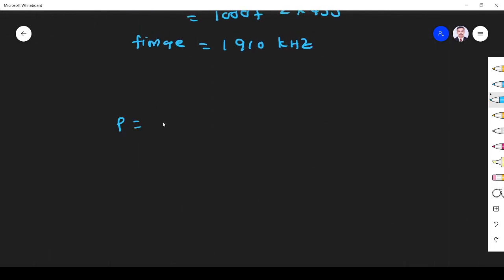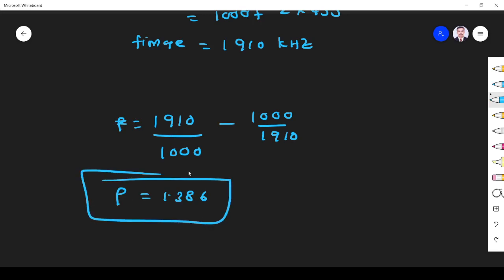So rho is 1910 divided by 1000 minus 1000 by 1910, that equals 1.386. Rho is 1.386.